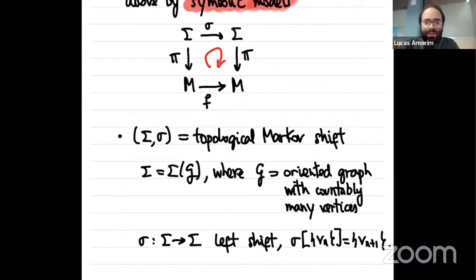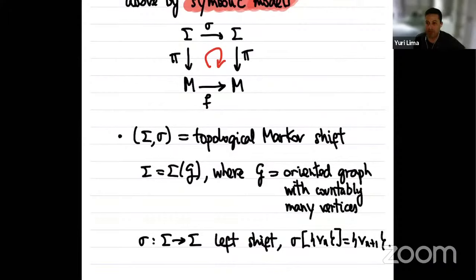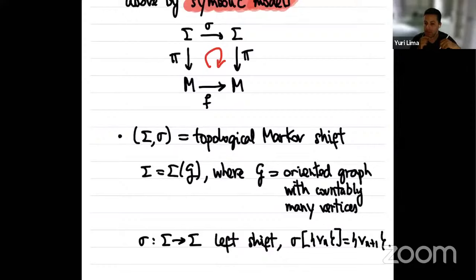There is a question: are these functions f always supposed to be invertible? It is very important. The first results treated the invertible situation, because the original proofs make strong use of the symmetry of having the future and the past. But the most recent results also treat the non-invertible situation, and I expect to talk a little bit about the non-invertible situation towards the end of the mini-course.